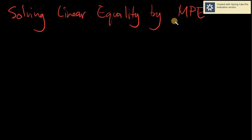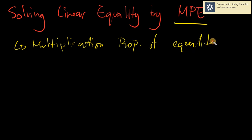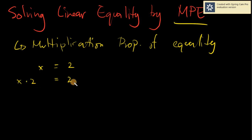By definition, MPE is simply known as the Multiplication Property of Equality. Just like in our APE, it's simply multiplying on both sides. So say I have x equals 2. MPE means that if I multiply the first term by 2, then I would also multiply the second half of the equation by 2. Whatever you do on the left-hand side, you also do on the right-hand side.